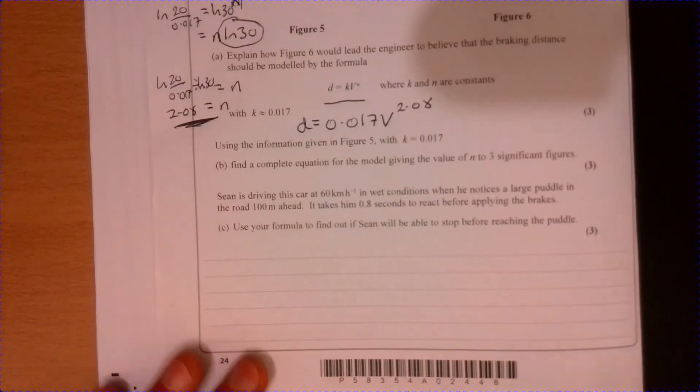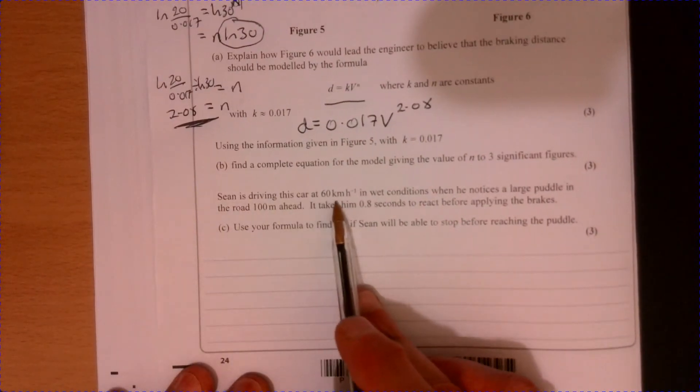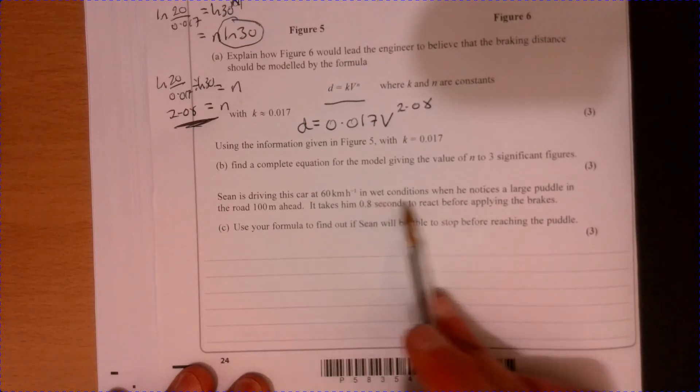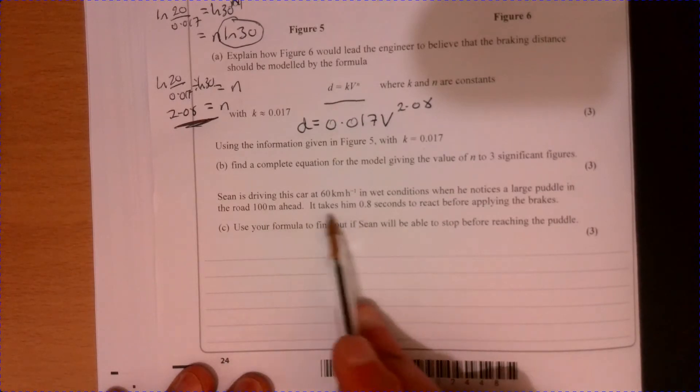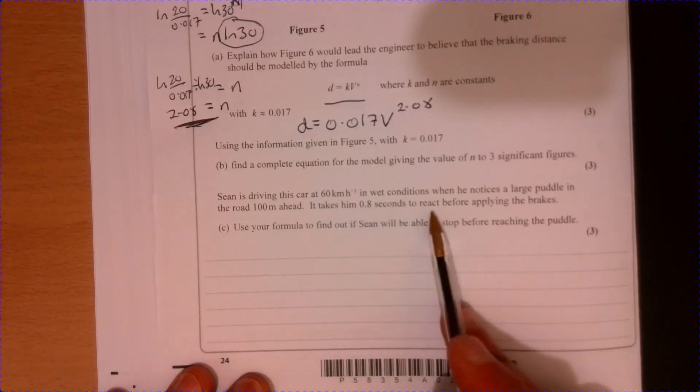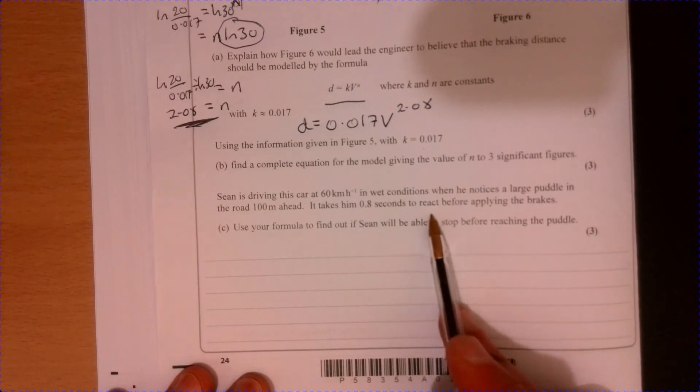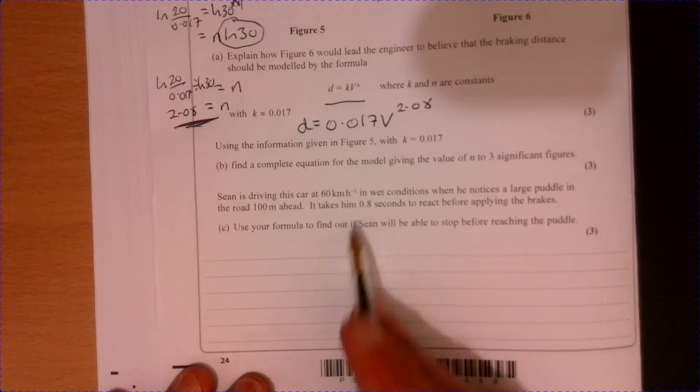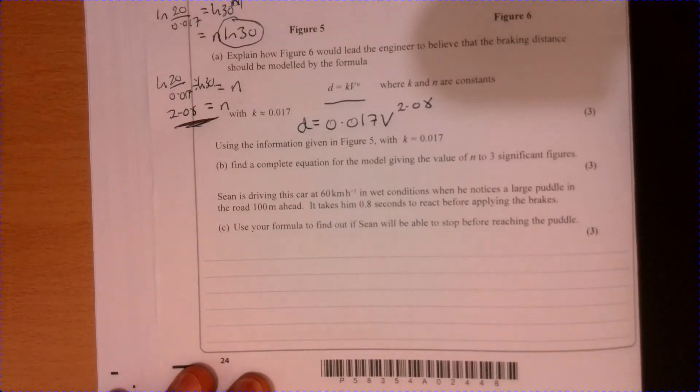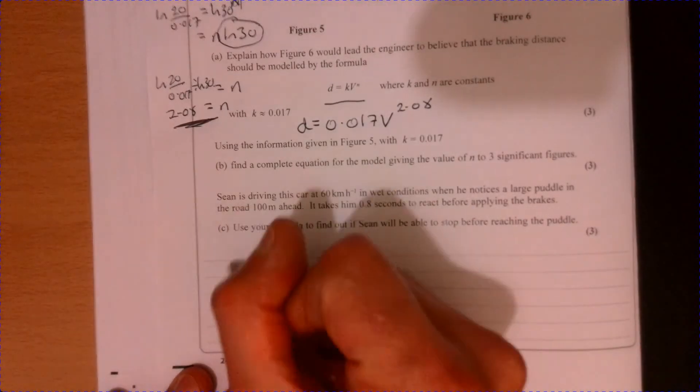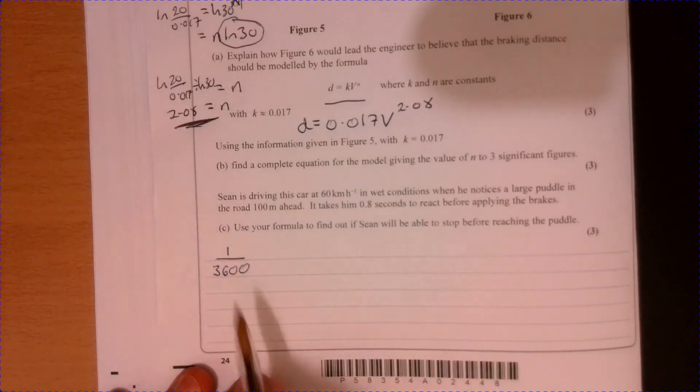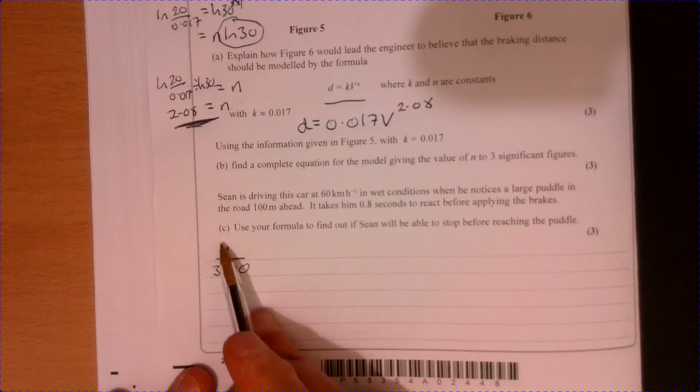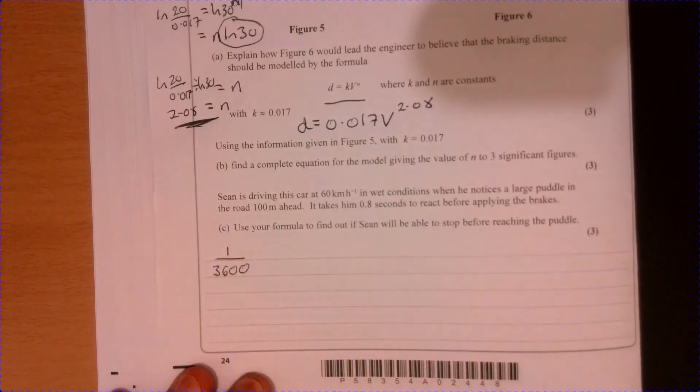Let's have a look at the last part of the question. Sean is driving at 60 kilometers per hour at the moment in wet conditions, so he's got to stop 100 meters. It takes him 0.8 seconds to react. During that 0.8 seconds he's going to be traveling some distance, and the best way of working that out is to think about seconds in terms of an hour.